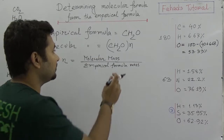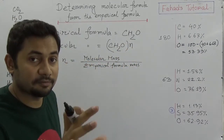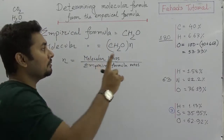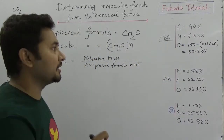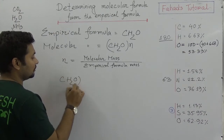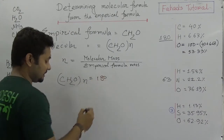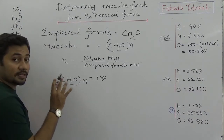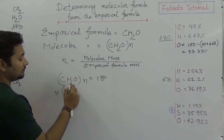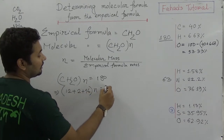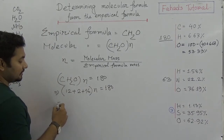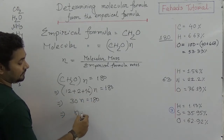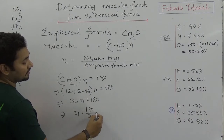Let's break it down to find N. The molecular mass is given as 180. So we set (CH2O)N = 180. We know the molecular mass of the empirical formula: carbon is 12, plus hydrogen times 2 is 2, plus oxygen is 16 — altogether the empirical formula mass is 30. So 30N = 180, and the value of N is 180 divided by 30, which equals 6.